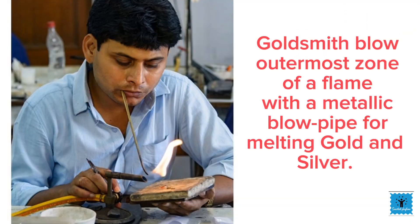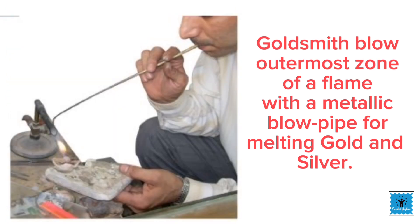Goldsmiths blow the outermost zone of a flame with a metallic blowpipe for melting gold and silver because it is the hottest part of the flame.